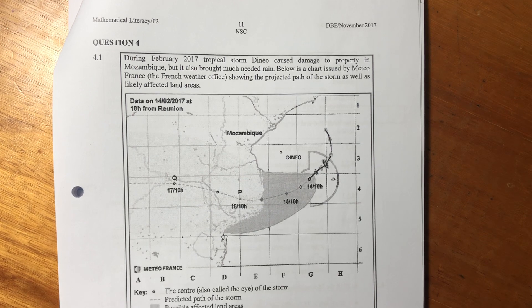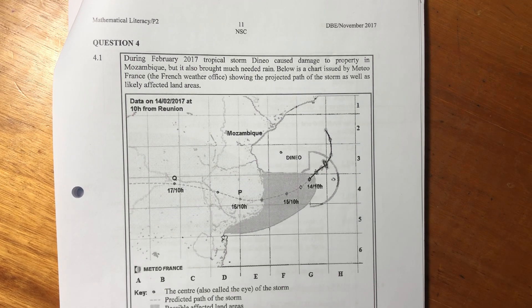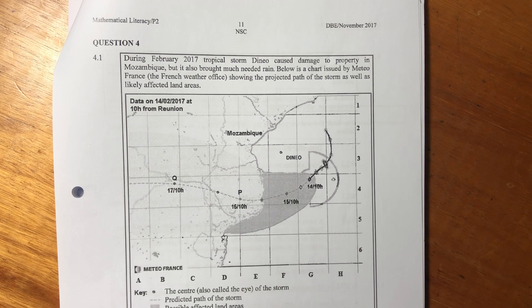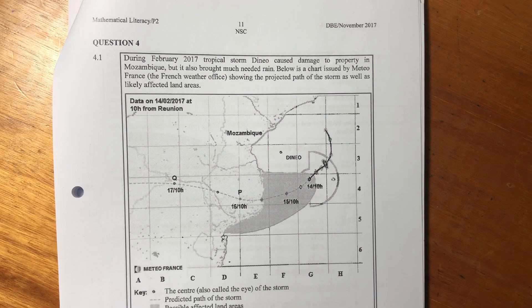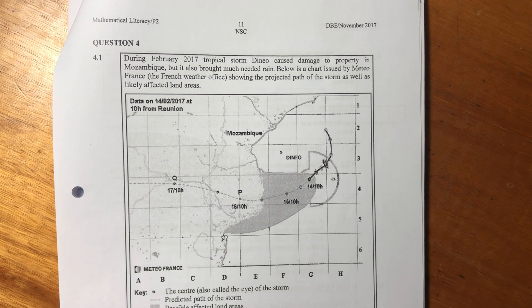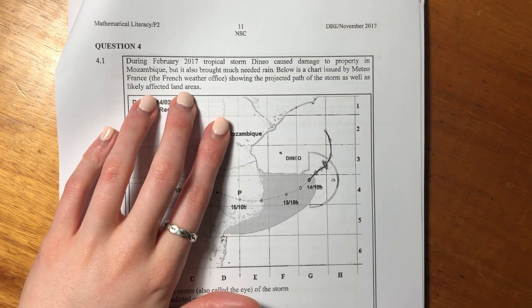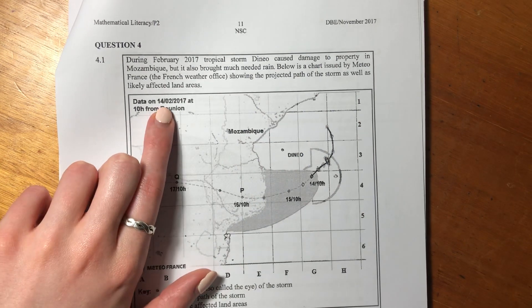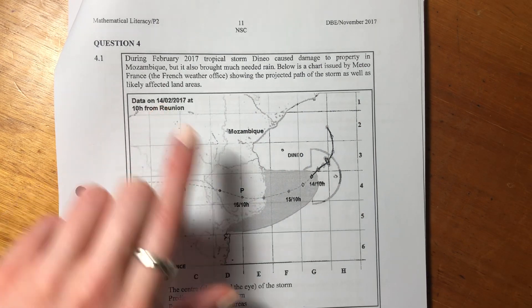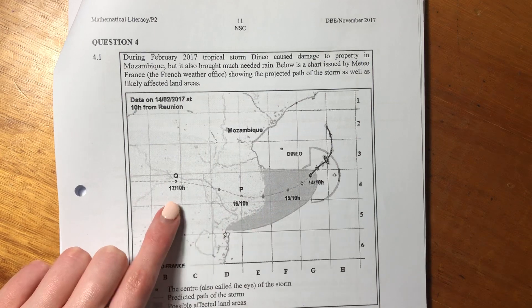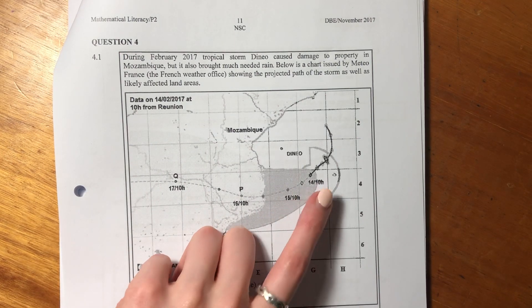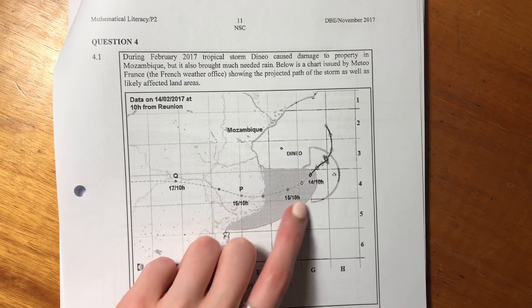It says during February 2017, tropical storm Deneo caused damage to property in Mozambique, but it also brought much needed rain. Below is a chart issued by Meteor France, the French Weather Office, showing the projected path of the storm as well as it likely affected land areas. So we see that it is in February 2017, and the 14, 15, 16, and 17 are all different days in February, and it's saying basically these readings are every 24 hours at 10 o'clock each day.